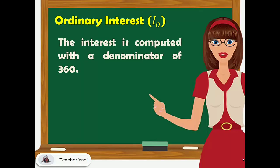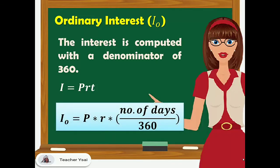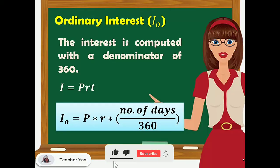Ordinary interest is the interest which is computed with a denominator of 360. We know that the formula in solving for simple interest is finding the product of the principal amount, the rate, and the time. To solve for ordinary interest, we have the formula: I sub O equals P times R times number of days over 360. Where I sub O stands for ordinary interest, P for principal amount, R for the rate, and the number of days over 360 is our T or time.